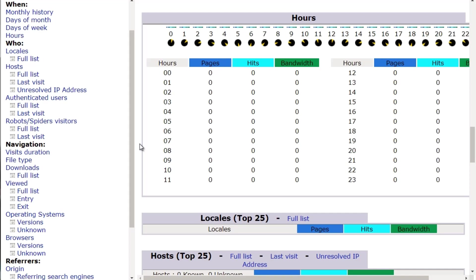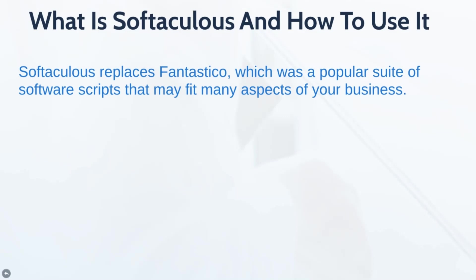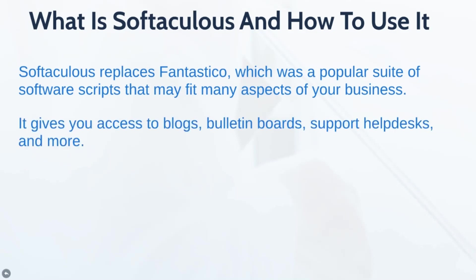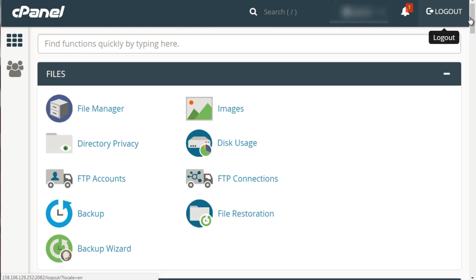Hello and welcome to video five. In this video you're going to learn what Softaculous is and how to use it. Softaculous replaced Fantastico, which was basically a popular suite of software scripts you can build into your website — things like WordPress, Joomla, forums, and many different free scripts that you don't have to spend extra money for. It gives you access to things like WordPress blogs, bulletin boards, support help desks, and more. We'll show you how to install things like WordPress in a few clicks.